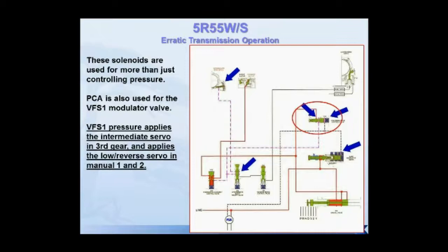Pressure control solenoid A — also called VFS number one, or Variable Feed Solenoid number one — applies the intermediate servo in third gear and the low reverse servo in manual one and manual two. That solenoid at the bottom of the picture controls the VFS number one valve, which controls the intermediate servo. If there's a problem with the pressure coming out of pressure control solenoid A, you'll have a problem with the stroke rate of that valve and therefore the servo. The wrong pressure or volume out of that solenoid will create problems with intermediate servo apply.